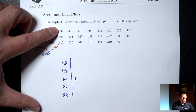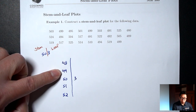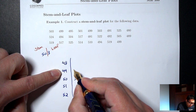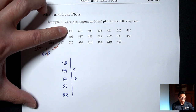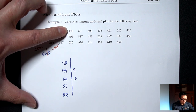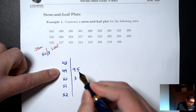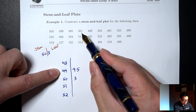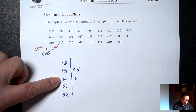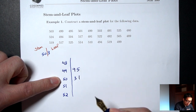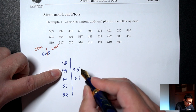Next up, 499 — that's going to go with the 49 stem, and we just write the very last digit, which is 9. Next, 495 — that goes with the 49 again, and we write the last digit, which is 5. Then 501 goes with the 50 stem, and we write the last digit, which is 1. Then 499 again goes with the 49 stem.